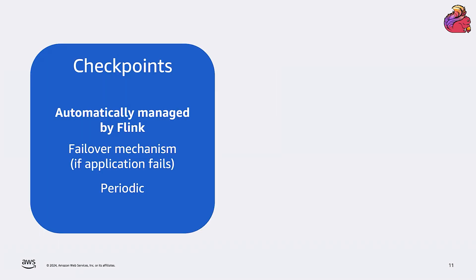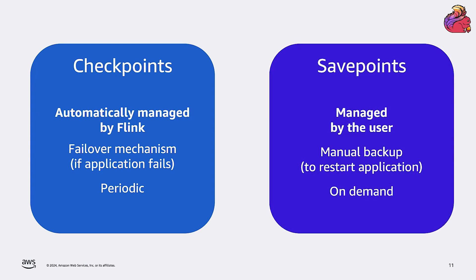Flink actually has two similar but separate mechanisms for saving the state. The two mechanisms have different goals. The first one is the checkpoint that we have seen so far. Checkpoints are managed automatically by Flink and executed periodically, for example, every minute. Checkpoints are a failover mechanism that Flink uses to automatically recover the application state in case of failure. The other mechanism is called savepoints. They are practically on-demand checkpoints. They are triggered by the user.